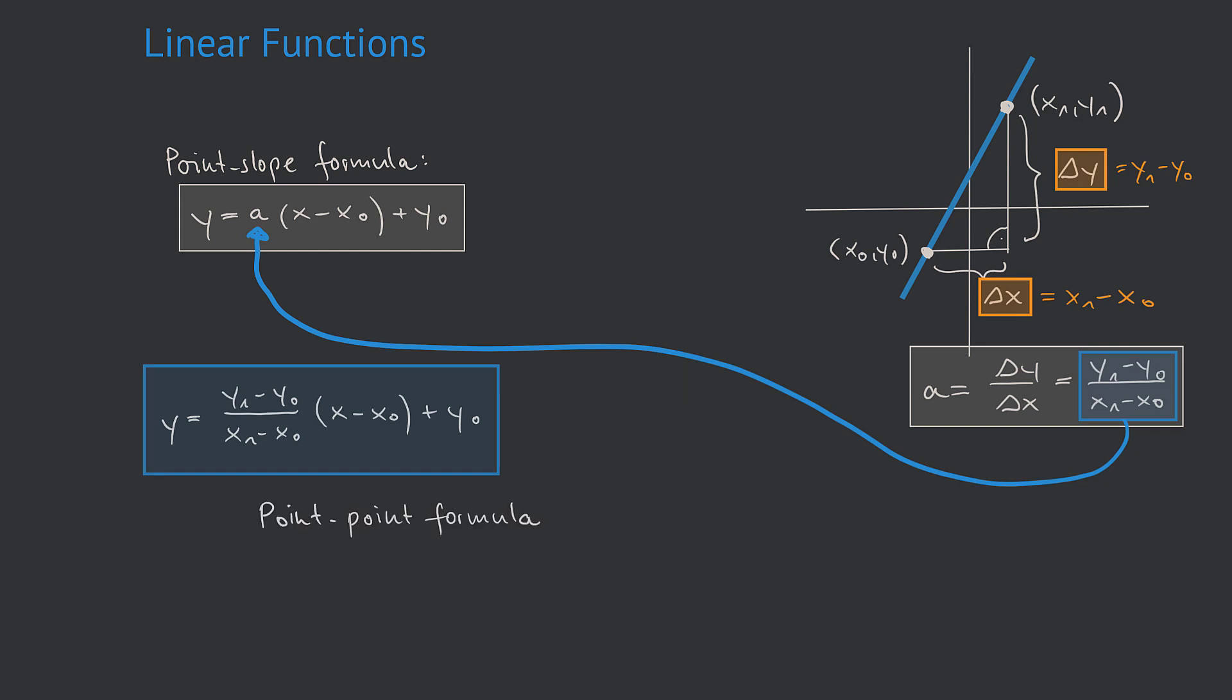It's important to have a precise understanding of all these x's and y's in this formula. The first known point x0, y0 is used here. The second known point x1, y1 is used here. The remaining y and x are the variables which make this formula a function.